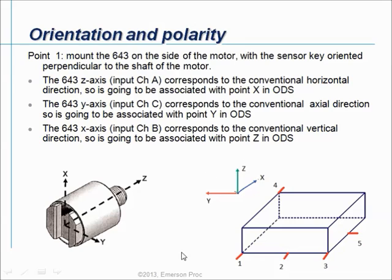If you install the triax sensor in the horizontal radial direction, perpendicular to the shaft of the motor, the Z axis of the sensor — input A — corresponds to the conventional horizontal direction and will be associated with the X direction in the ODS. The Y axis of the sensor — input C — corresponds to the conventional axial direction and will be associated with the Y direction in the ODS. The X axis of the sensor — input B — corresponds to the conventional vertical direction and will be associated with the Z direction in the ODS.